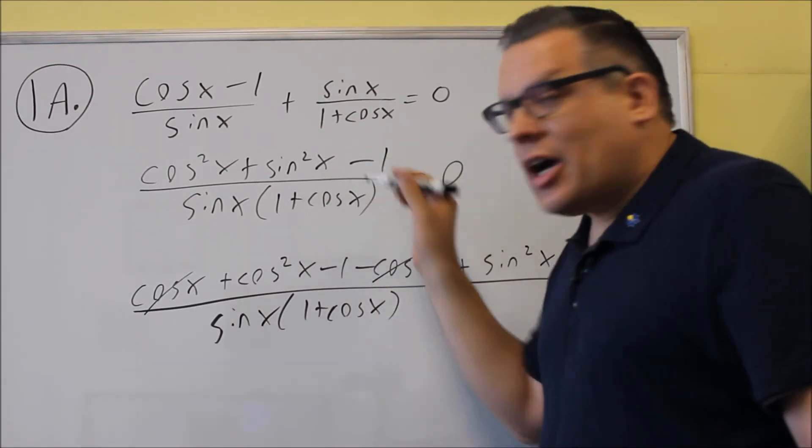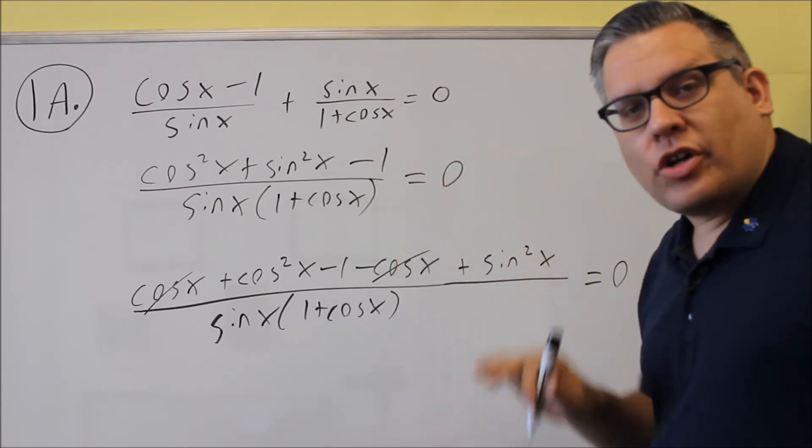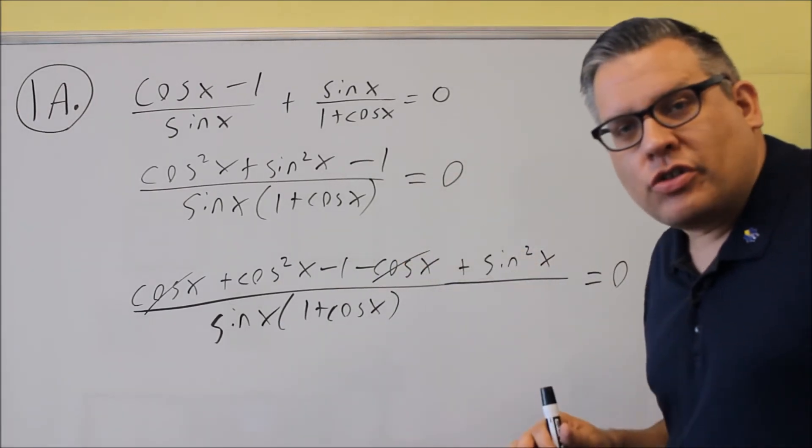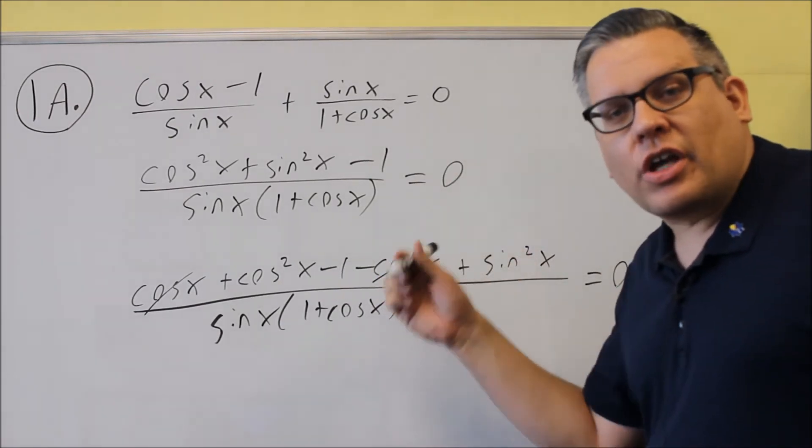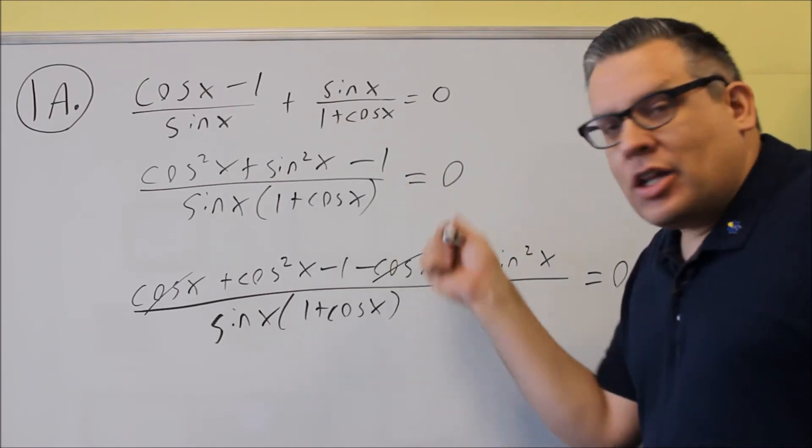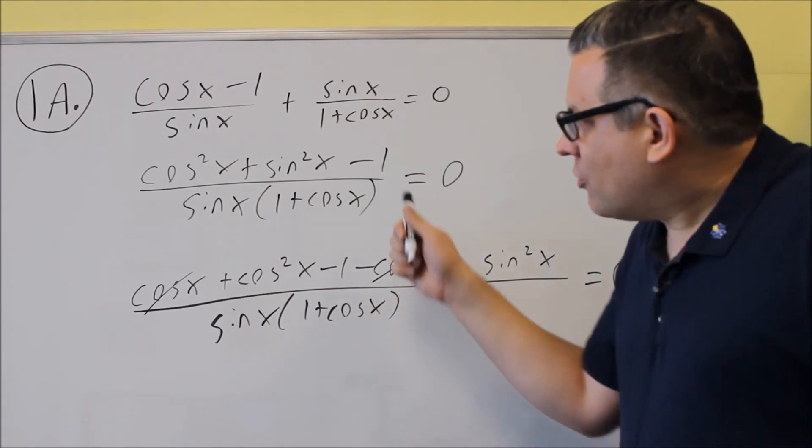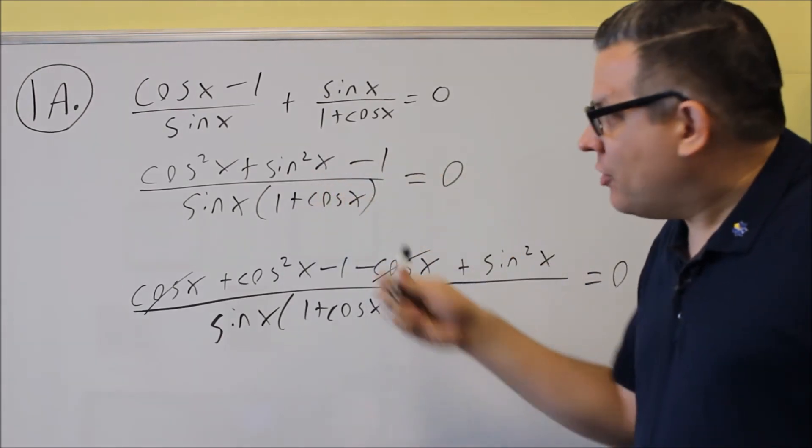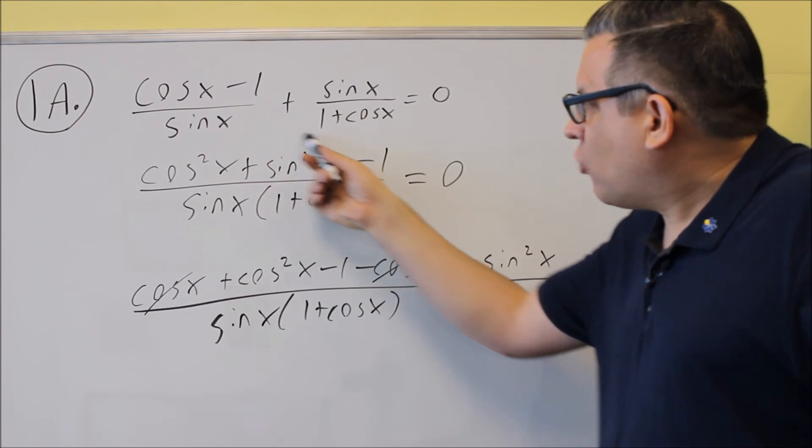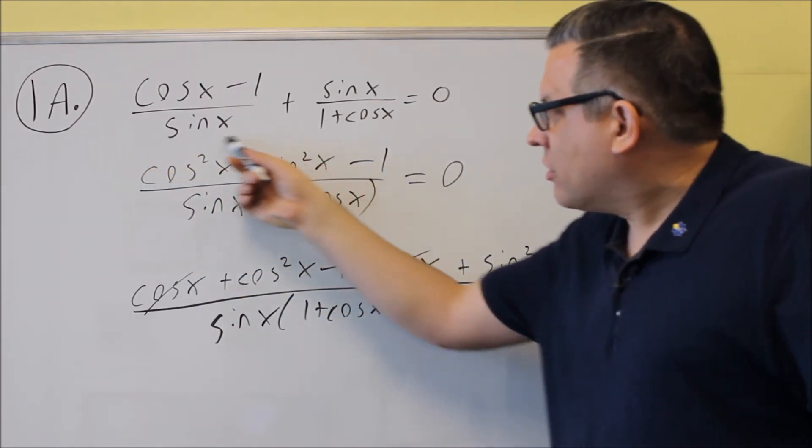Now once you get down to this step, if you can't go any further with it and you're not sure what to do, this is when you want to start looking at that list of identities that we had in the beginning of this section where this problem comes from. And look for common identities you can put in.